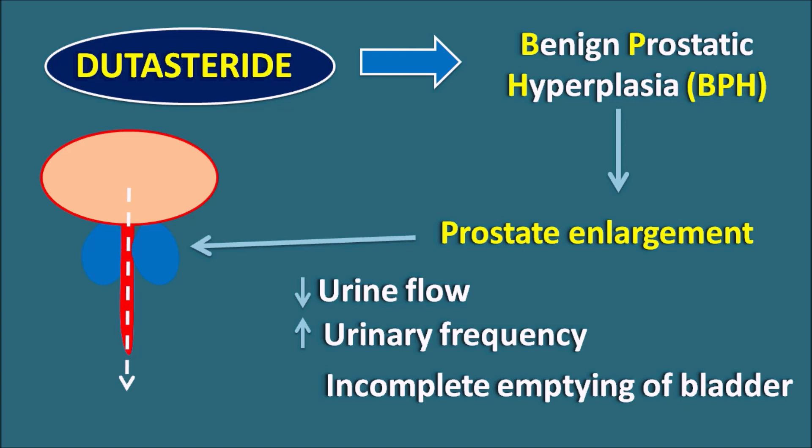Dutasteride can be used to treat benign prostatic hyperplasia. This drug acts by inhibiting androgenic activities, thereby reducing prostate enlargement and improving the symptoms of BPH.